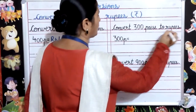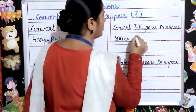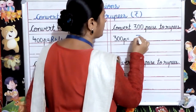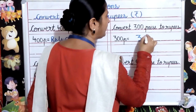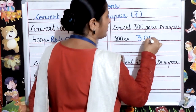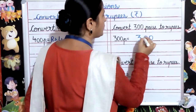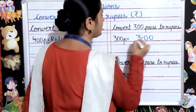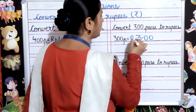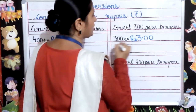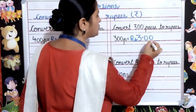For converting 300 paise to rupees, first we will write 300, then we will count 2 digits from the right — 1, 2 — and put a point here, and write rupees in the beginning. 300 paise equals rupees 3.